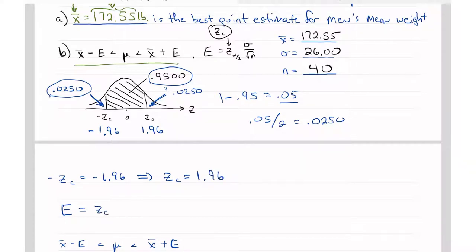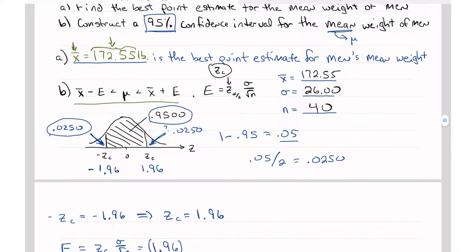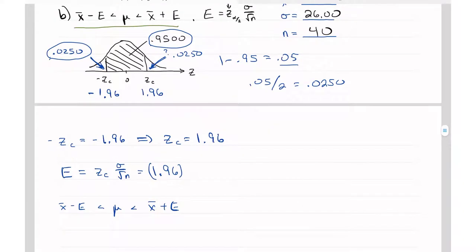E, which is equal to Z sub C times σ over the square root of n. Z sub C is a positive 1.96, σ is 26, and I need the square root of 40. Now when I get my calculator and I multiply 1.96 times 26 divided by the square root of 40, I get 8.05748.